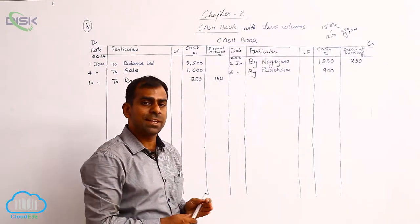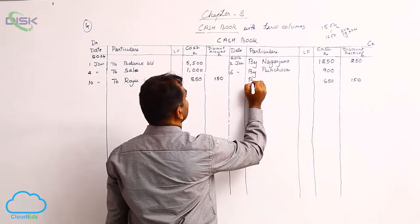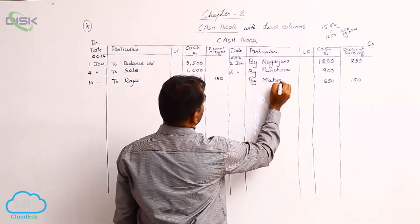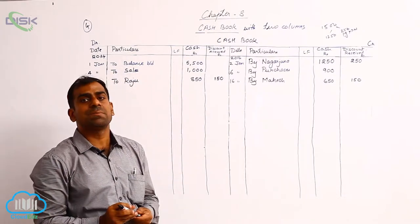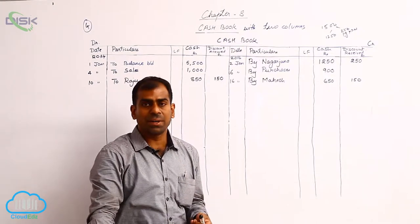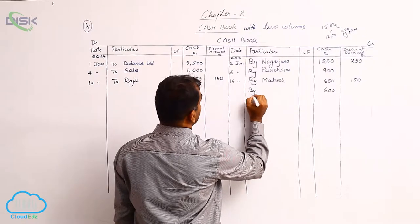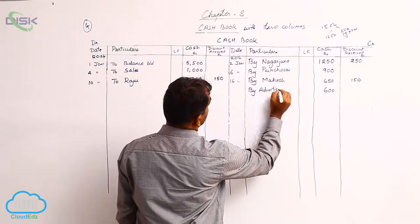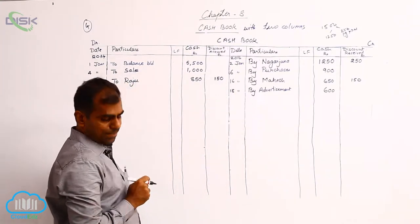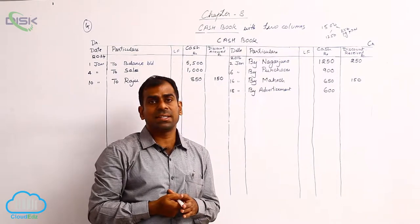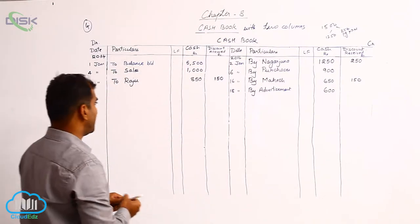On 16th January, paid cash to Mahesh 650, discount received 150. This is treated just like the 2nd January transaction — enter 650 in the cash column, 150 in the discount received column, and Mahesh in the particulars column. On 18th January, paid advertisement expenses 600 — cash is going out, so record 600 on the credit side with the reason 'advertisement', date being 18th.